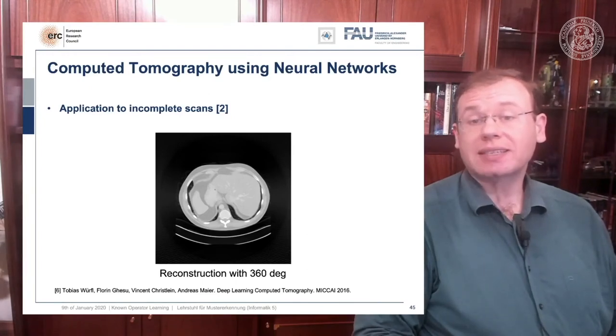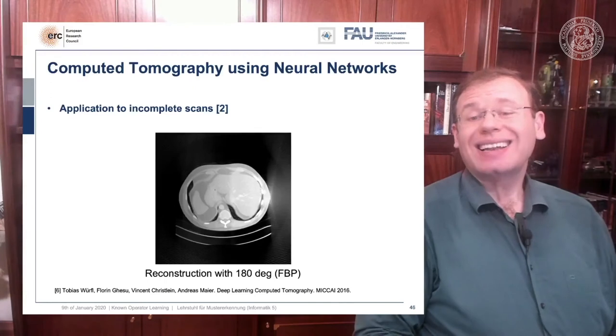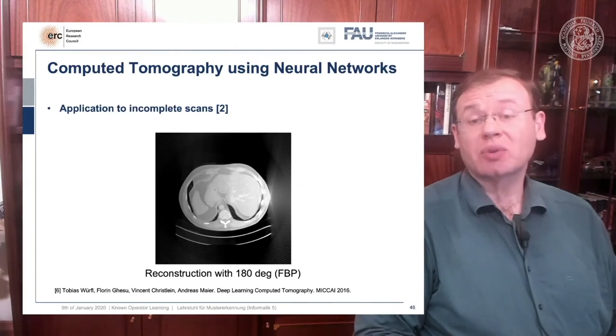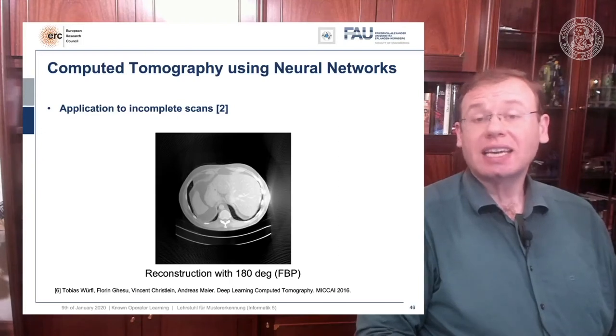Let's look at what happens if we go back to this limited angle tomography problem. If you have a complete scan it looks like this. Let's go to a scan that has only 180 degrees of rotation. Here the minimal set for the scan would be actually 200 degrees. So we are missing 20 degrees of rotation, not as strong as the limited angle problem that I showed in the introduction of known operator learning, but still significant artifact emerges here.